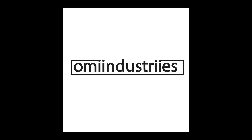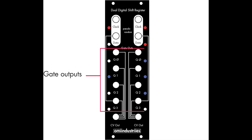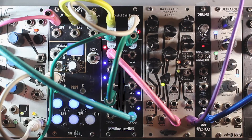The DDSR features two channels, each with four gate outputs. Every time the module receives a clock pulse, it shifts the state of the gate down one stage. The gates are continuous, meaning if two high signals pass through a stage in a row, the output will stay high for two clock pulses.